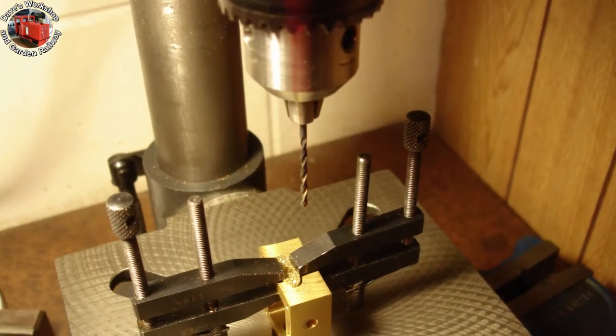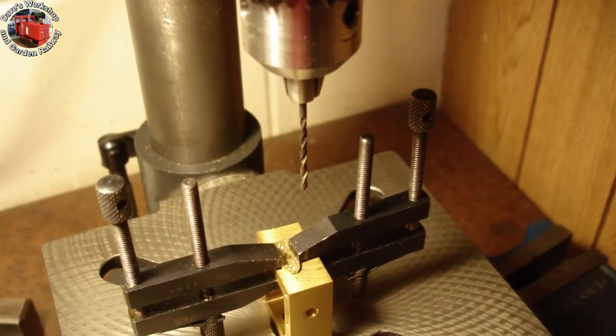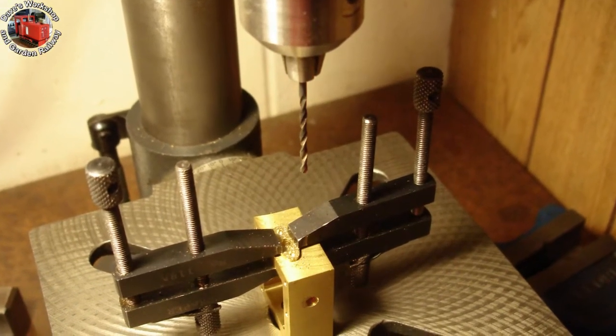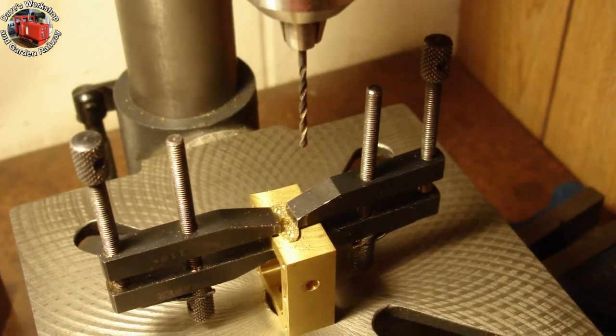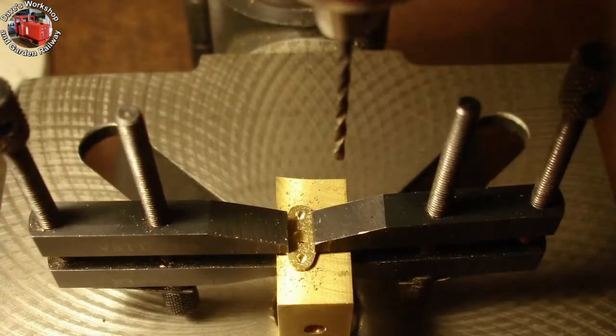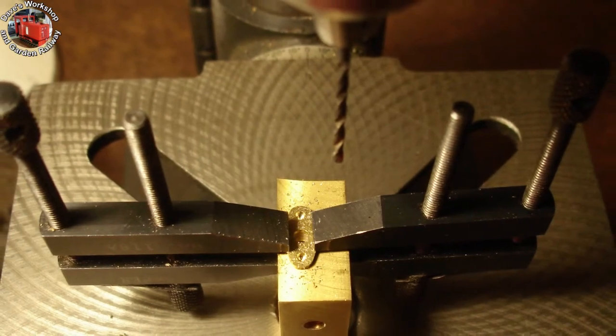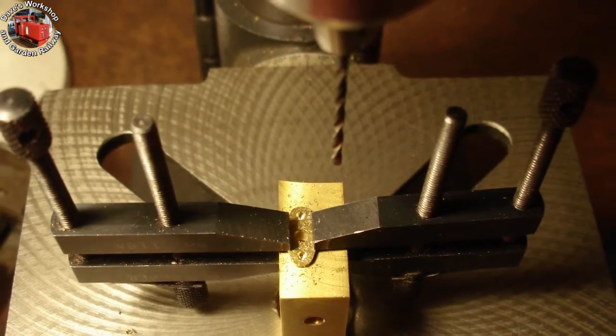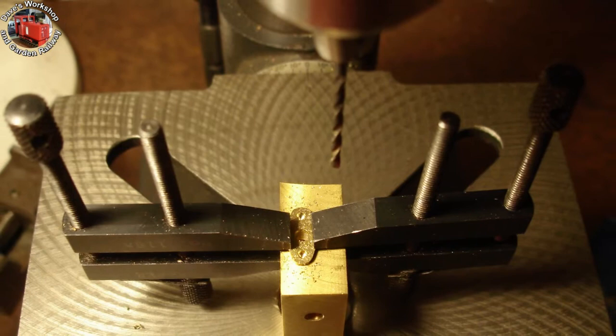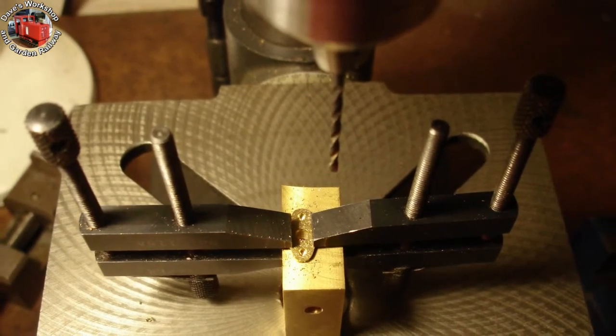Spot drilling through the cover into the second steam chest for the 8 BA threads. The cover is held in the correct position by a three sixteenth steel pin with a one eighth diameter step on its end. The holes were spotted with a 2.2 mil drill, and then drilled to depth with a 1.8 mil 8 BA tapping drill.